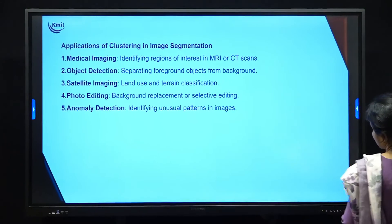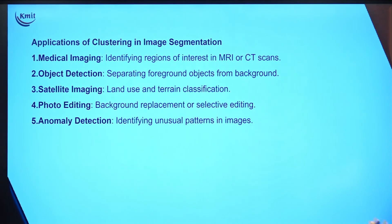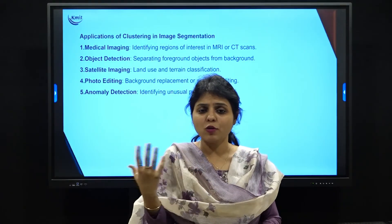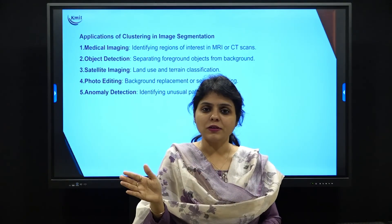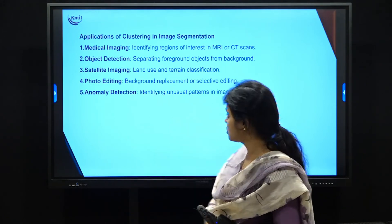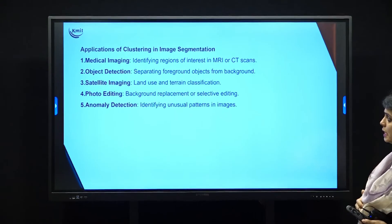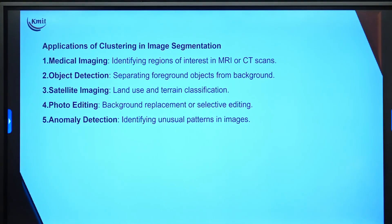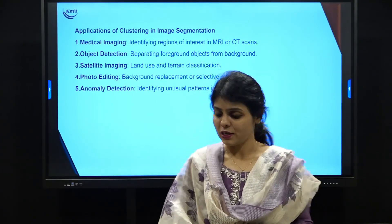There are different applications of clustering in image segmentation. In medical imaging — MRI or CT scans — clustering is used for object detection. For example, a Tesla car captures its surrounding environment while traveling, but we only need to segment the pathway for the car to travel, removing trees, dividers, and road signs. Satellite imaging for land use and terrain classification is another application, as are photo editing and anomaly detection using unusual patterns in images. Clustering is mostly used in most real-time data processing and image processing applications.